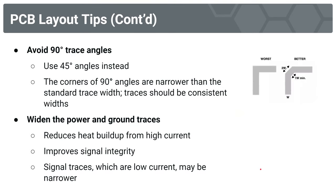We're getting to the end with two more important tips. One is to avoid 90-degree trace angles. The corners of 90-degree angles are going to be narrower than the standard trace width, and we want traces to be consistent widths. Instead of using 90-degree trace angles, we should strive for 45-degree or 135-degree angles instead.